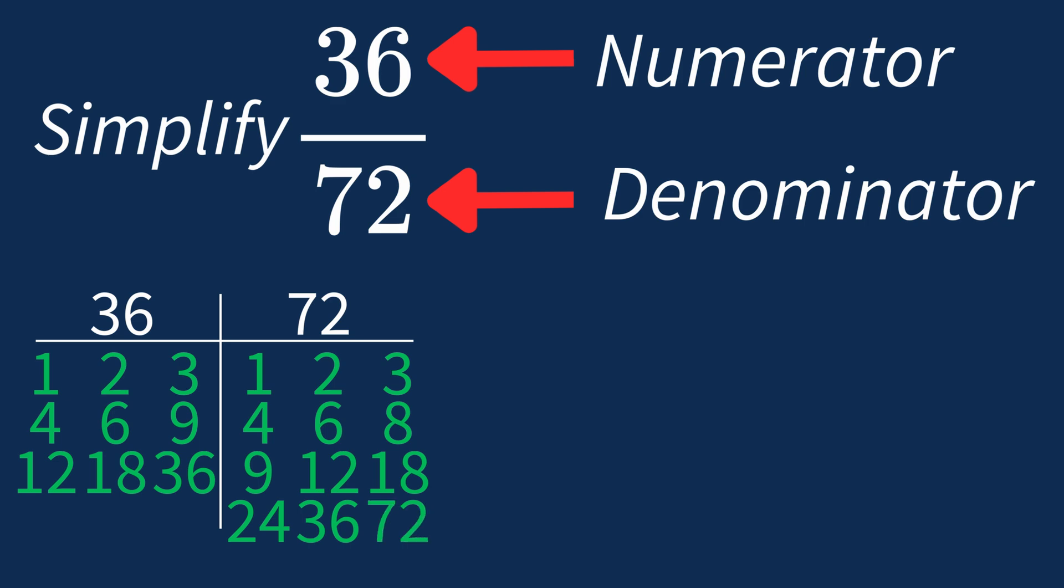So the largest common factor between 36 and 72 is 36. This means we can divide both the numerator and denominator by 36 to simplify the fraction.